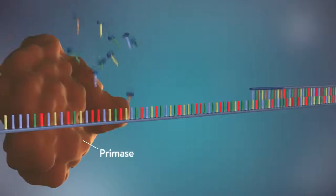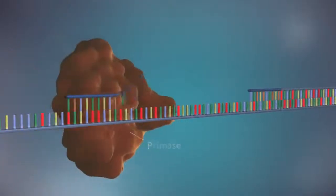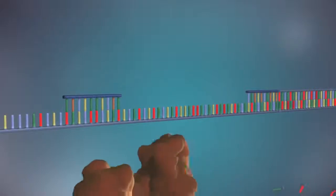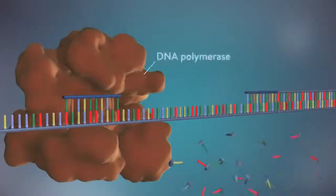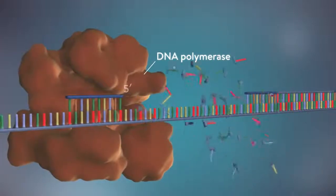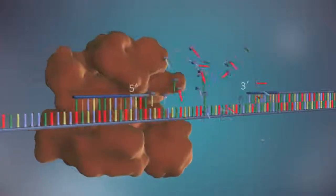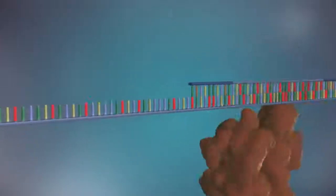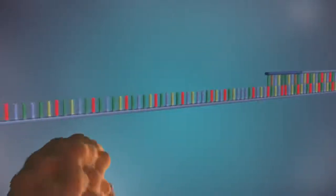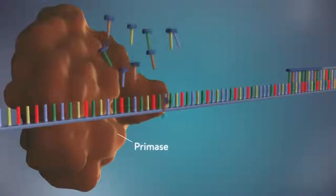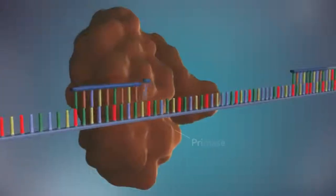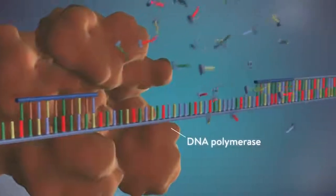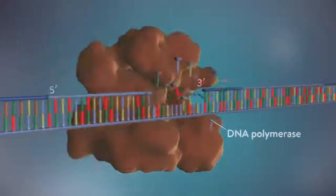Each fragment is started with an RNA primer. DNA polymerase then adds a short row of DNA bases in the five prime to three prime direction. The next primer is then added further down the lagging strand. Another Okazaki fragment is then made and the process is repeated again.